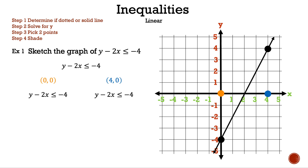Let's pick (0, 0) and (4, 0). We're using the given inequality in case we made a mistake with our operations. Let's substitute (0, 0) into the inequality: 0 minus 2 times 0 less than or equal to negative 4. And 2 times 0 is 0, and 0 minus 0 is 0. So we have 0 less than or equal to negative 4. That is false.